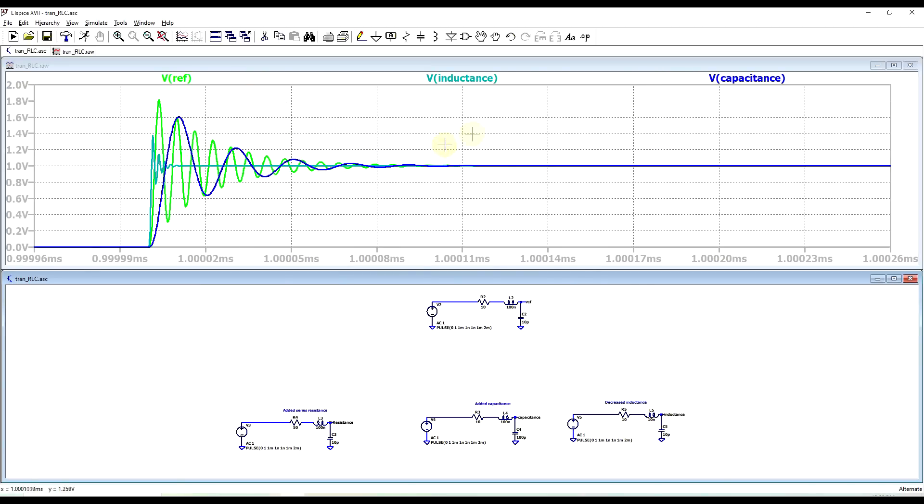Final thing to notice is that when you vary the inductance or the capacitance, the exact oscillation frequency will also change. So with less inductance we have a higher frequency, with more capacitance we have a lower frequency.